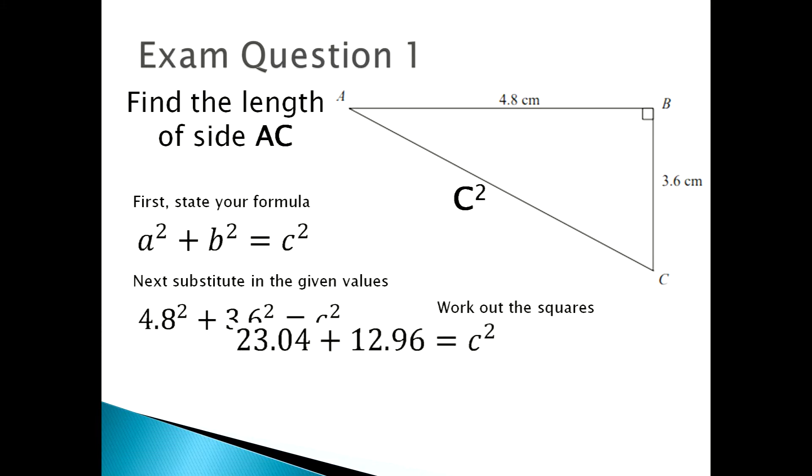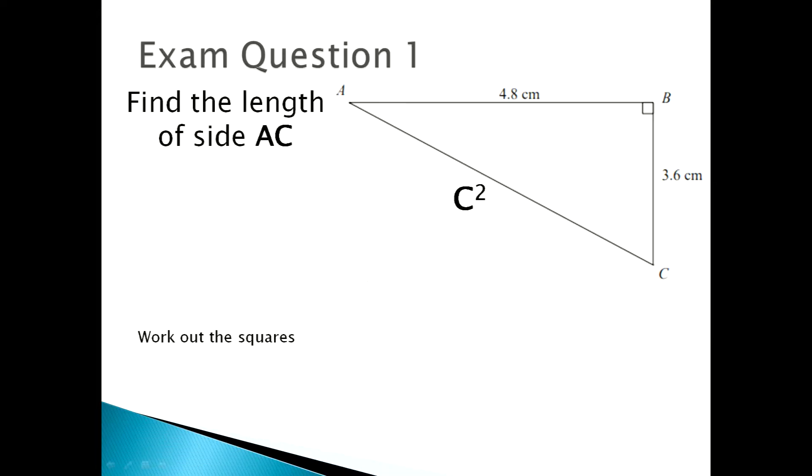Next, you need to work out the squares. So 4.8 squared is 23.04 and 3.6 squared is 12.96. After you've worked out your squares, then you add your squares together and that equals 36. So 36 is equal to c squared.